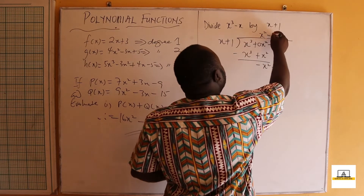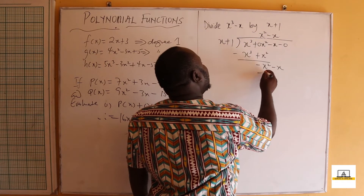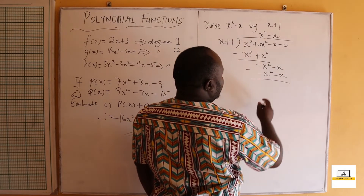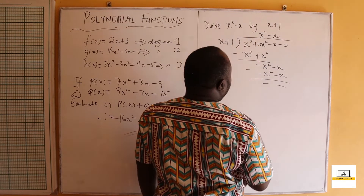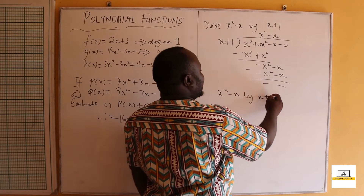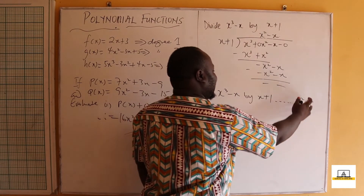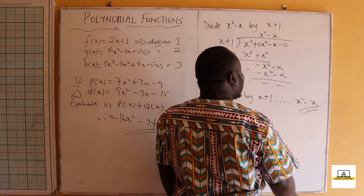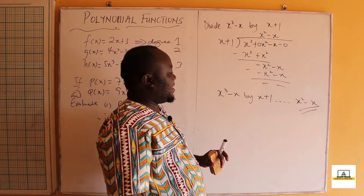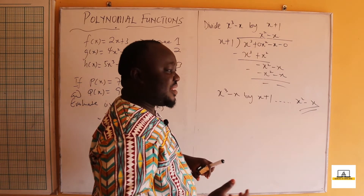What do we multiply with x to get -x? That's -x. So -x times x = -x² and -x times 1 = -x. We subtract: this gives zero and zero again. So dividing x³ - x by x + 1 gives a quotient of x² - x with a remainder of zero.